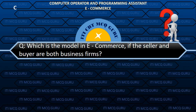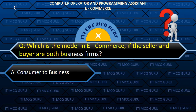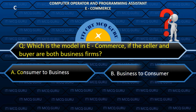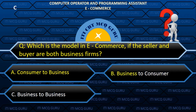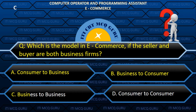Which is the model in e-commerce if the seller and buyer are both business firms? B. Business to business.